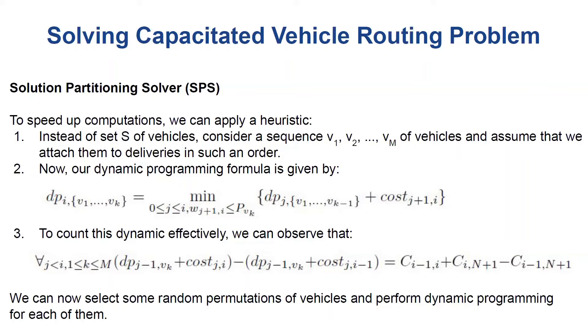We can now select some random permutations of vehicles and perform dynamic programming for each of them. If the number of possible permutations is small, which is, for example, a case in which all vehicles are identical, so that we have only one permutation, or if there are just two or three types of vehicles, so the number of possible permutations is still relatively small and all such cases are realistic, we may potentially check all the possible permutations and find the exact optimal solution, assuming, of course, that we can solve TSP.